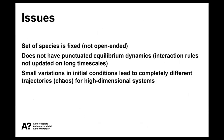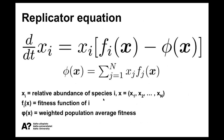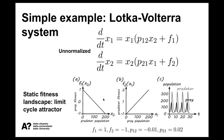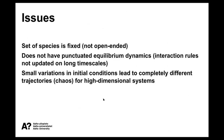There are some issues with the replicator equation and Lotka-Volterra approaches: the set of species is fixed, so evolution is not open-ended - we cannot create an arbitrary number of new species, and it doesn't have punctuated equilibrium dynamics. And if we have a lot of different species, this will be a very high-dimensional system where small variations in initial conditions lead to completely different trajectories. So it's very hard to predict anything with this kind of system.